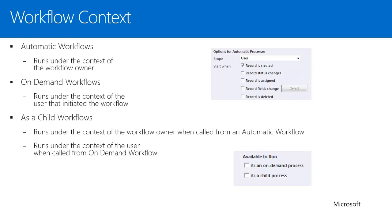When you have a parent workflow that triggers a child workflow, similar context comes into play. If the workflow is triggered automatically, the child workflow will also run under the context of the owner of the workflow. If it's an on-demand workflow that triggers an on-demand child workflow, that will run under the context of the user that initially triggered it. So it's important to keep context in mind, because users may not have permissions the workflow needs to complete.